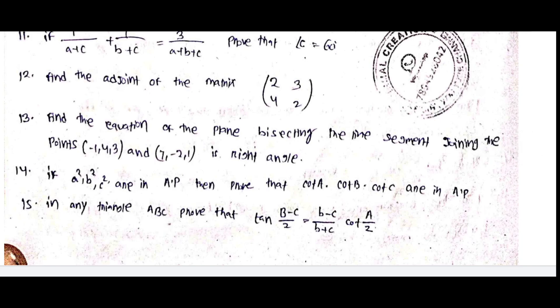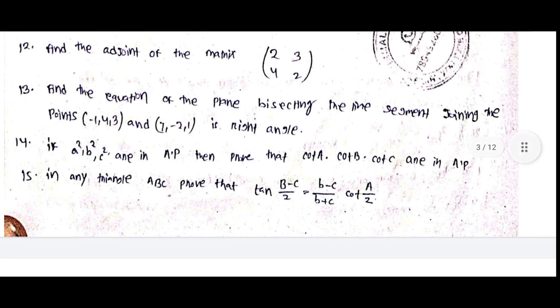Find the adjoint of the matrix 2, 3, 4, 2. Find the equation of the plane bisecting the line segment joining the point. It should be minus 1, 4, 3, 7, minus 2, 1 at right angle. If a square, b square, c square are in AP then prove that cot A, cot B, cot C are in AP. In any triangle ABC prove that tan b minus c by 2 equal to b minus c divided by b plus C cot A by 2.